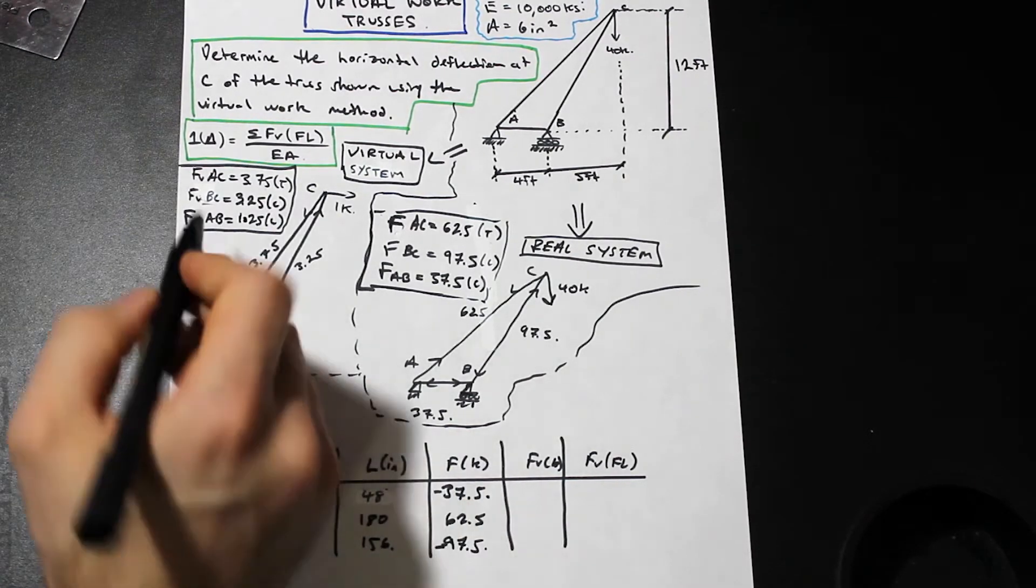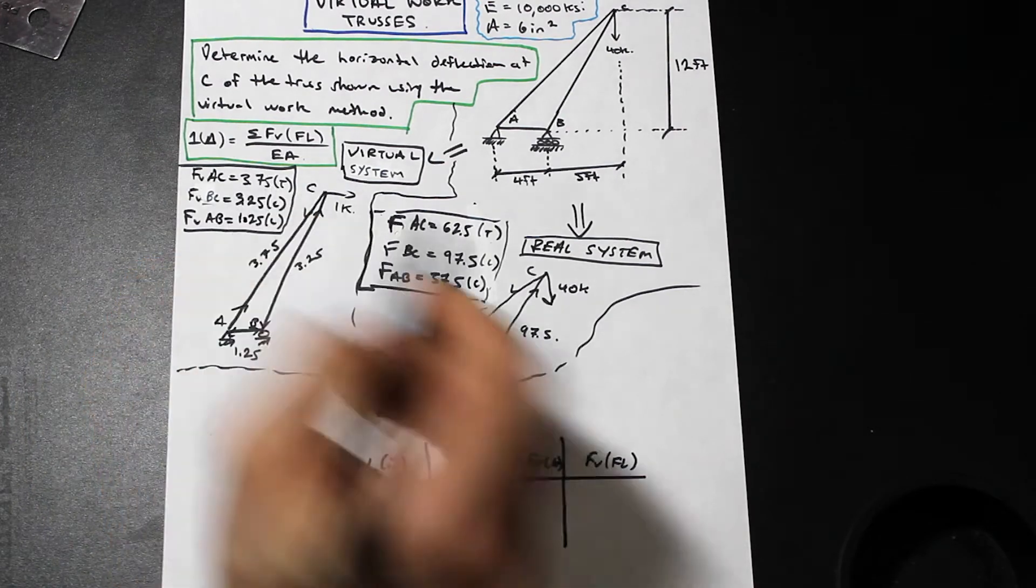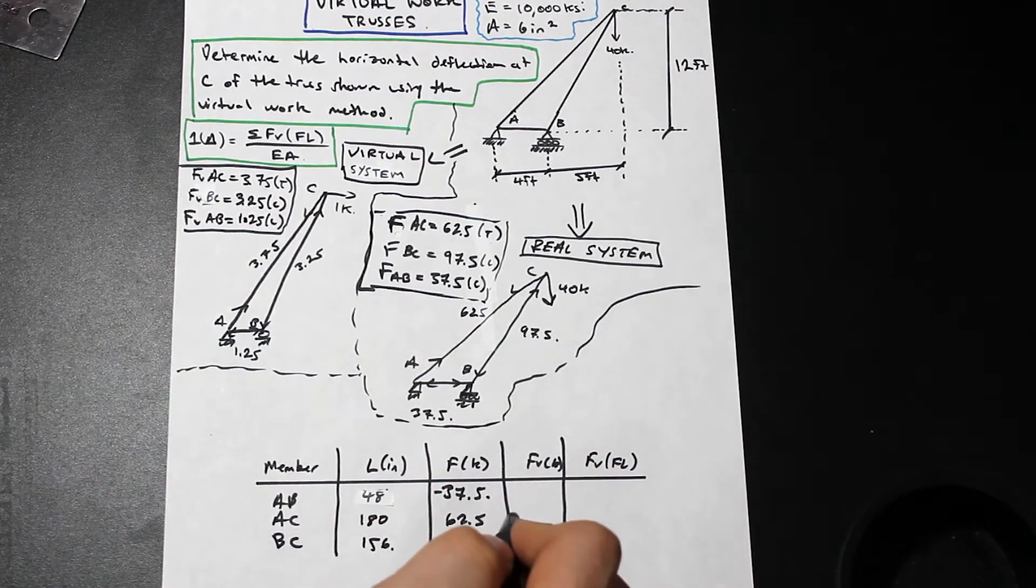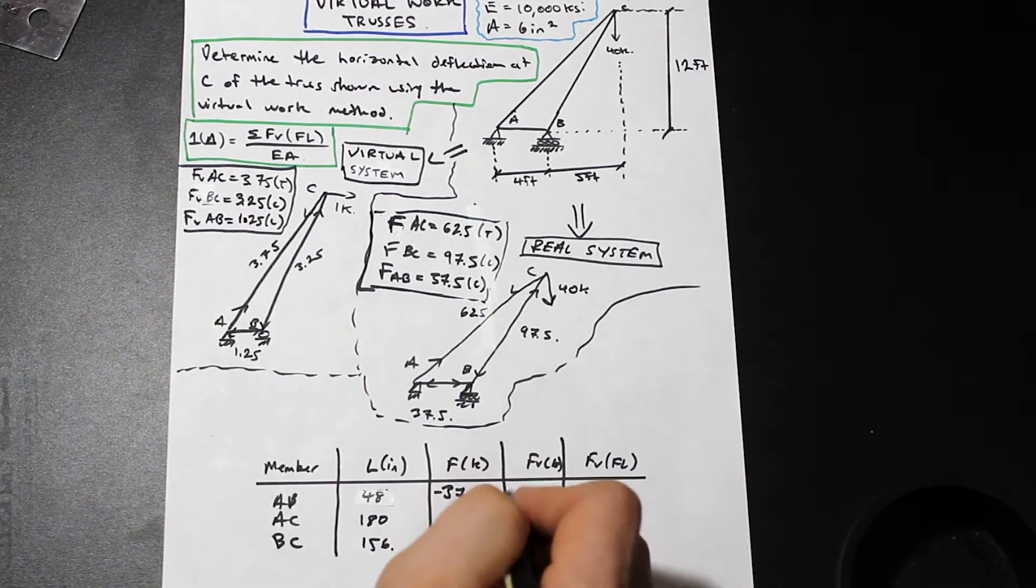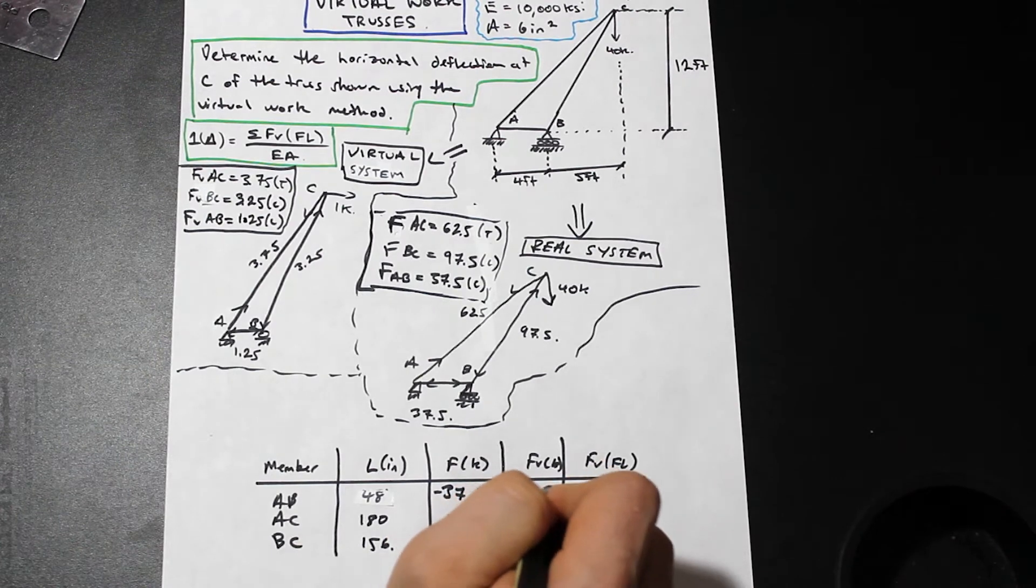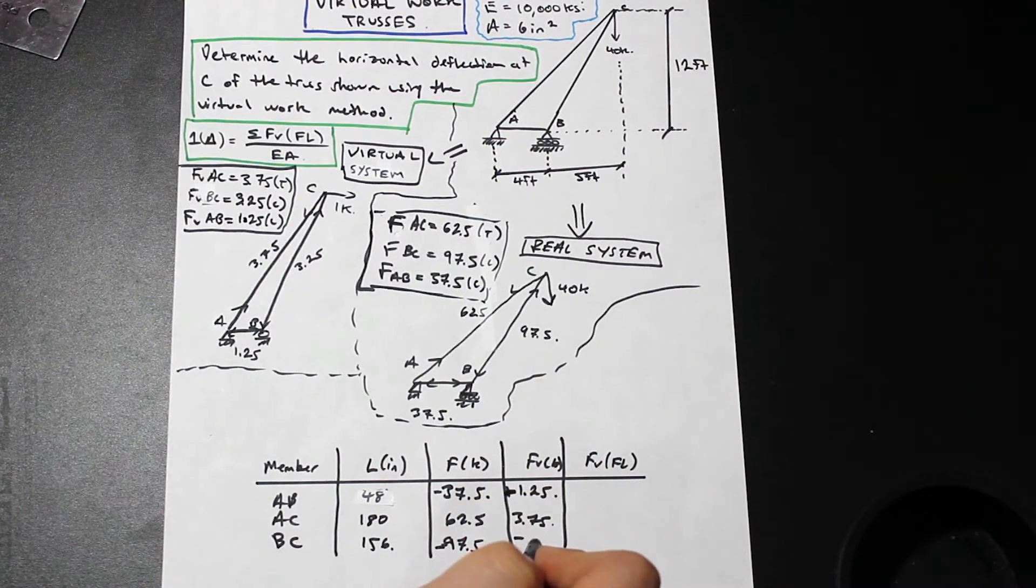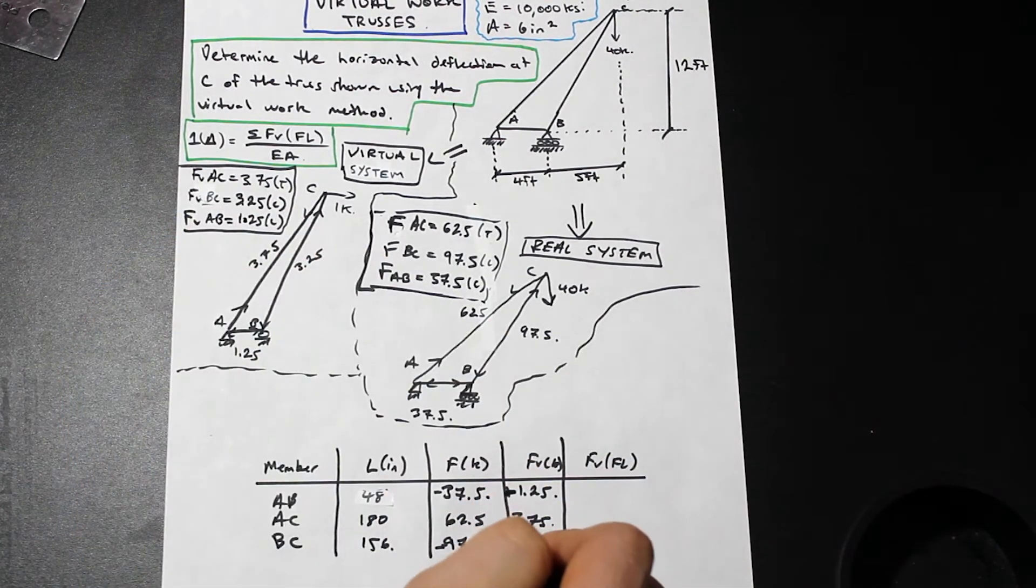Now for FV, the virtual system, same thing. We're going to just fill in. We have AC that was positive, 3.75. For AB it's 1.25 negative for compression. And for BC we have compression again, 3.25.